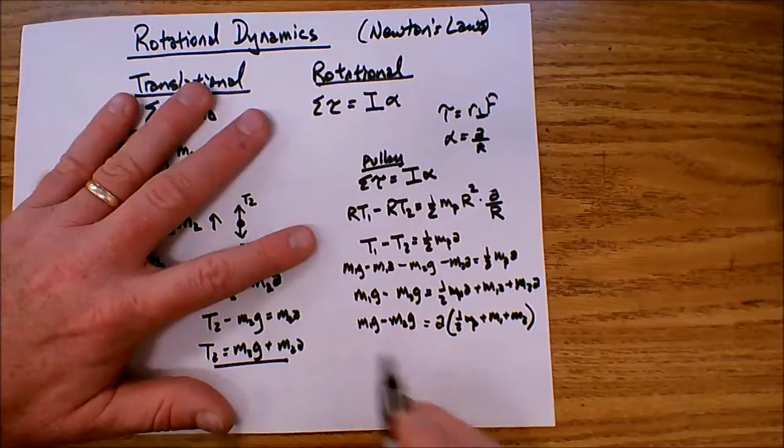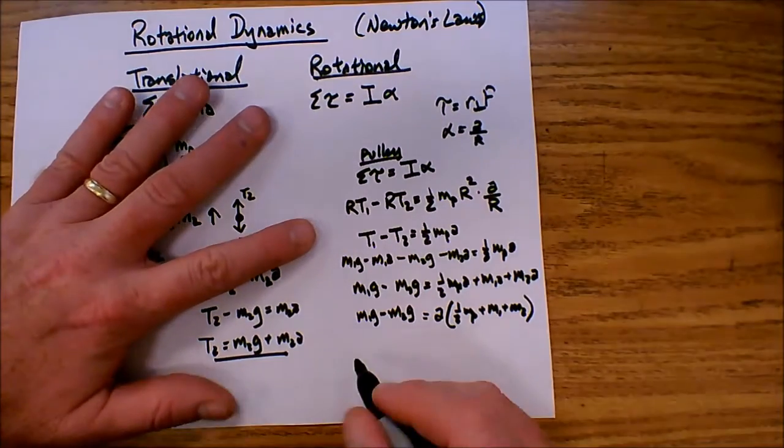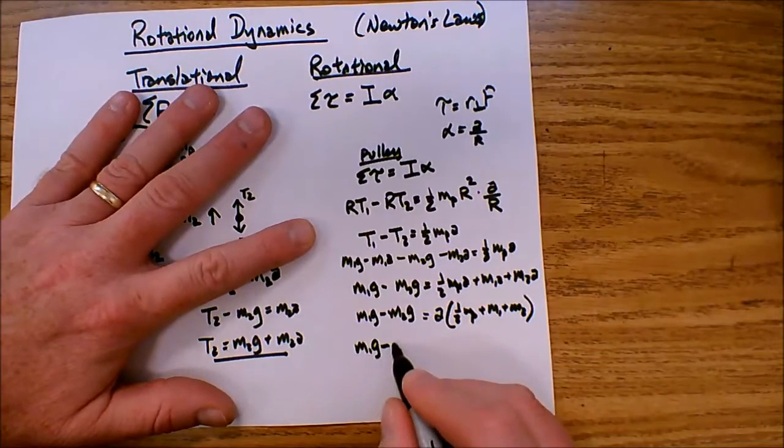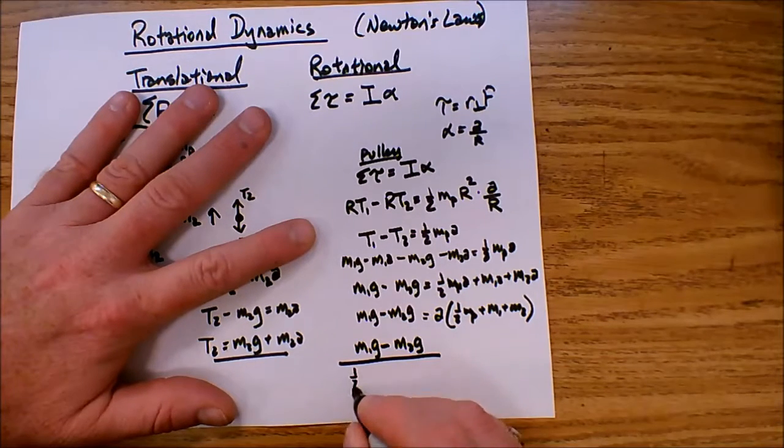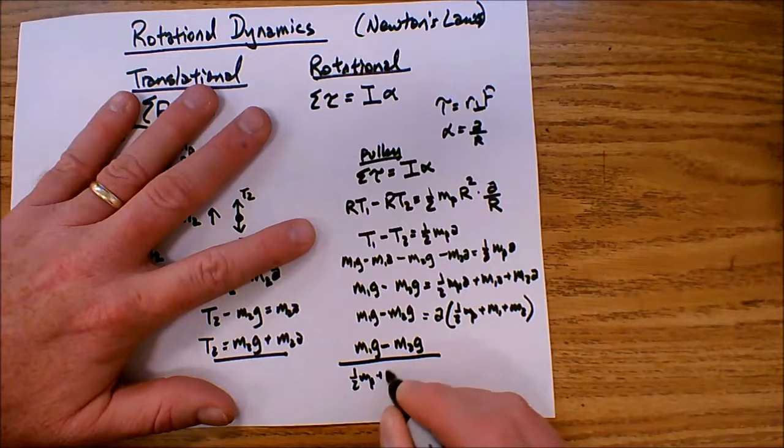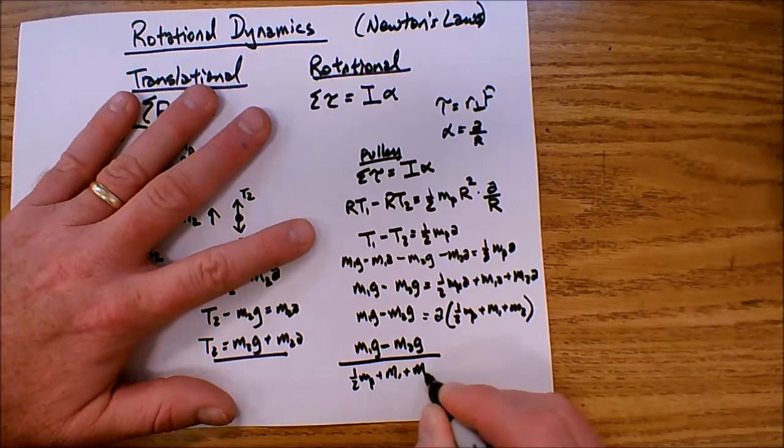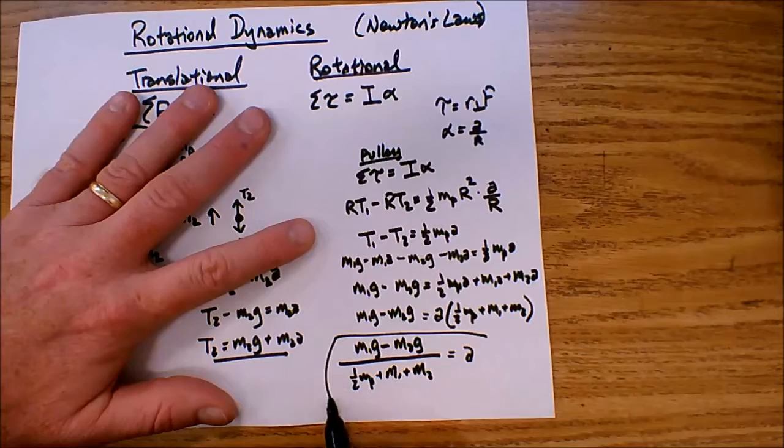And then I simply divide this over, and that will give me an expression for the acceleration. M1G minus M2G, all of this over one half mass of the pulley plus M1 plus M2, that equals my acceleration.